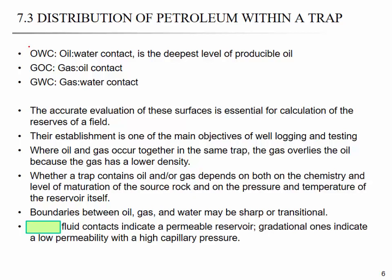The location of these contacts can be determined by drilling and well logging, because even though you find the trap, it doesn't mean it contains hydrocarbons — you have to drill the well to confirm their presence. The boundary between oil and gas, and oil and water, may be sharp or transitional. An abrupt fluid contact indicates a permeable reservoir, while a gradual or transitional contact indicates low permeability with high capillary pressure.